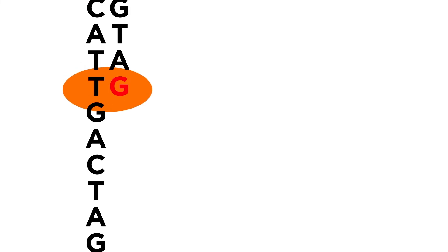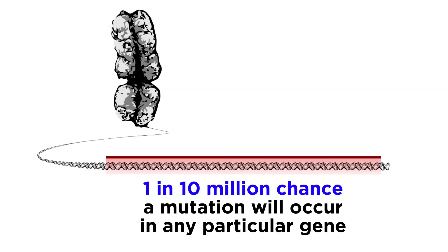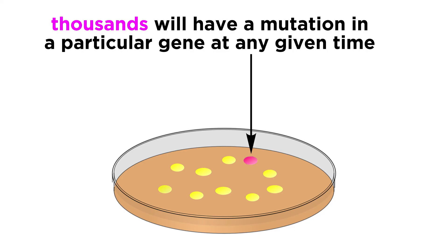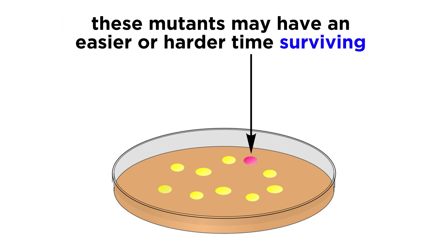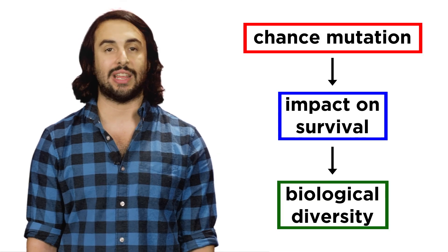As we know from biochemistry, sometimes errors occur during DNA replication, and this is one cause of genetic differentiation. Given that the probability of a mutation occurring in a particular gene is around one in ten million, and that billions of new bacterial cells can be generated each day, several thousand bacteria in such a culture will have a mutation in a particular gene. This will impact the products of gene expression, which may increase or hinder the cell's ability to survive. We will later see how this simple fact accounts for the incredible diversity of life on earth.